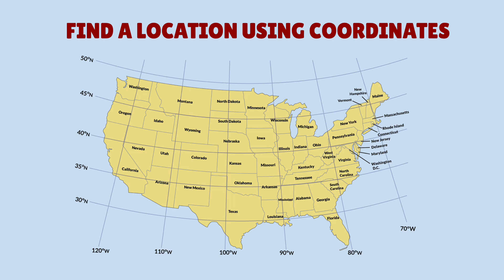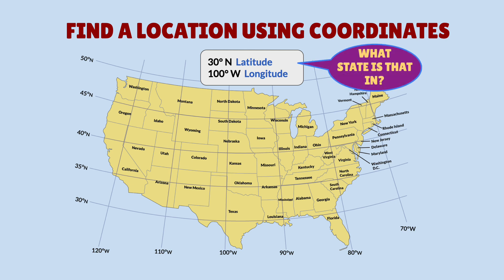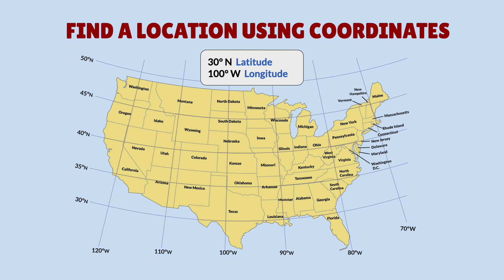Let's see if you can find a location using coordinates. Take the coordinates 30 degrees north and 100 degrees west. What state is that in? See if you can find out — pause the video if you need a minute. Here's 30 degrees north and here's 100 degrees west. If you found that the location is in the state of Texas, you got it right. Good job.